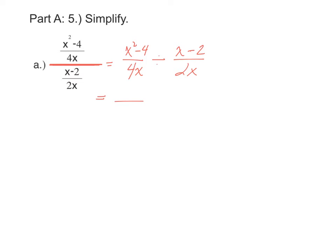So I'm going to keep my first fraction the same and just factor it. x squared minus 4 is x plus 2, x minus 2, and I'll have 4x in the denominator. Dividing by a fraction is the same as multiplying by the reciprocal. So dividing turns into multiplying and the fraction turns into its reciprocal, 2x over x minus 2.